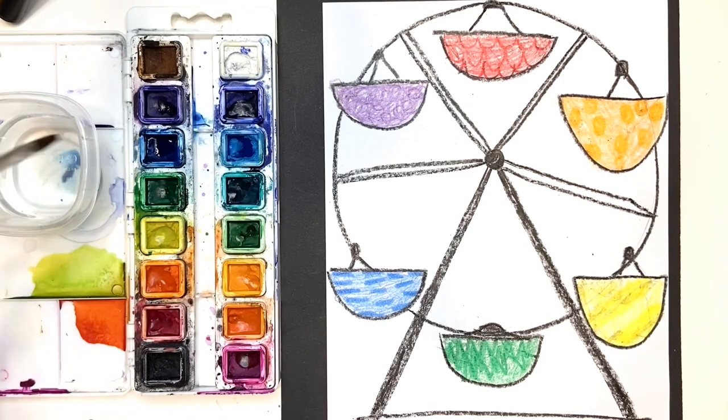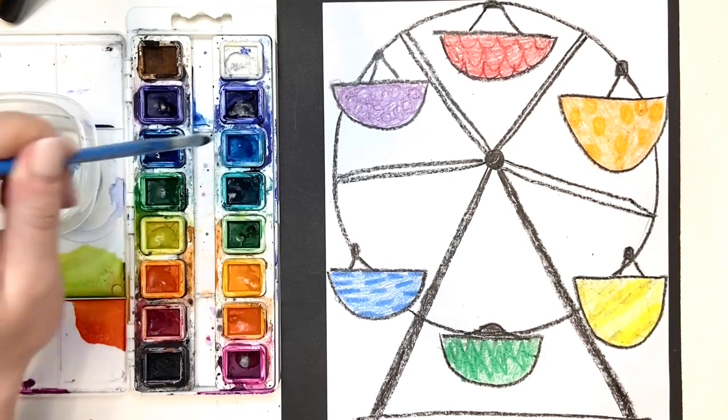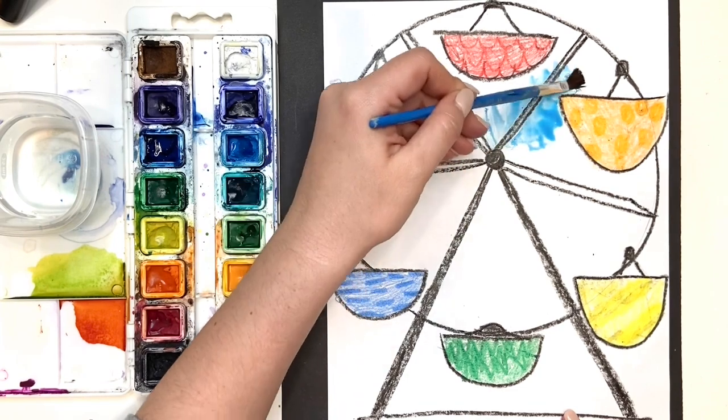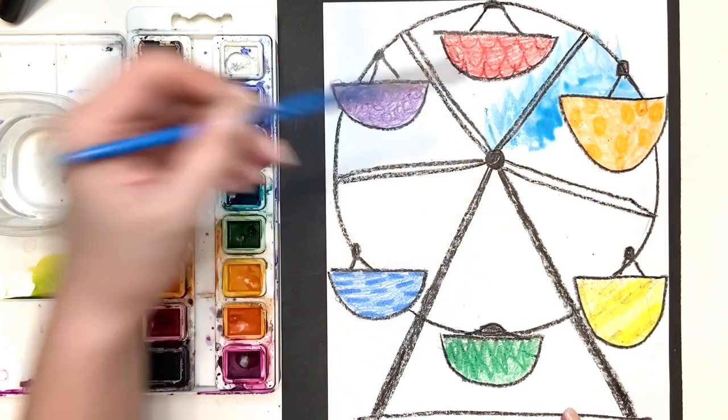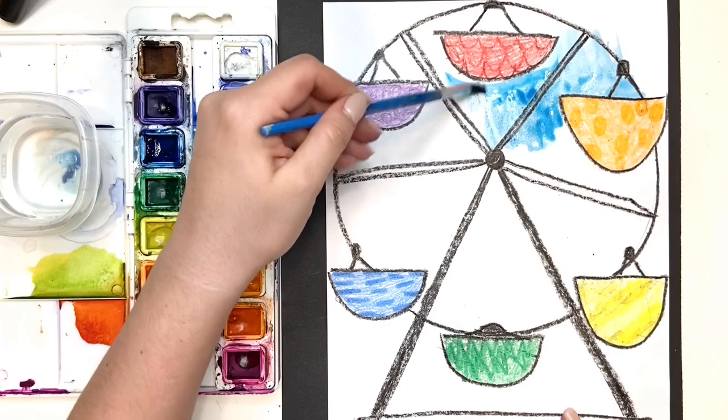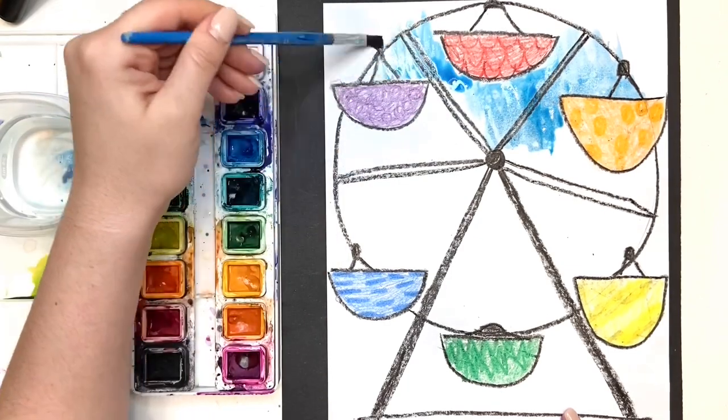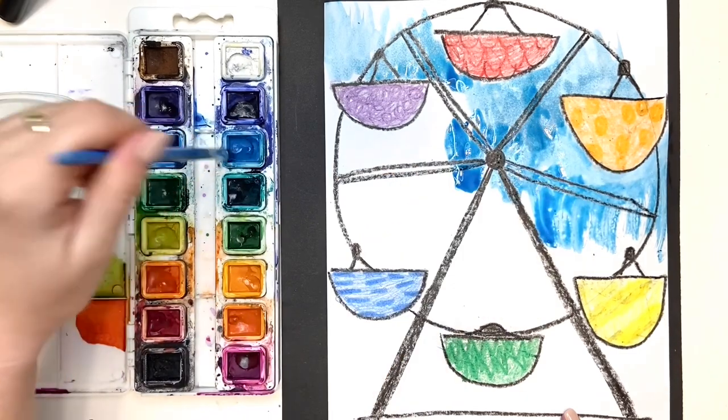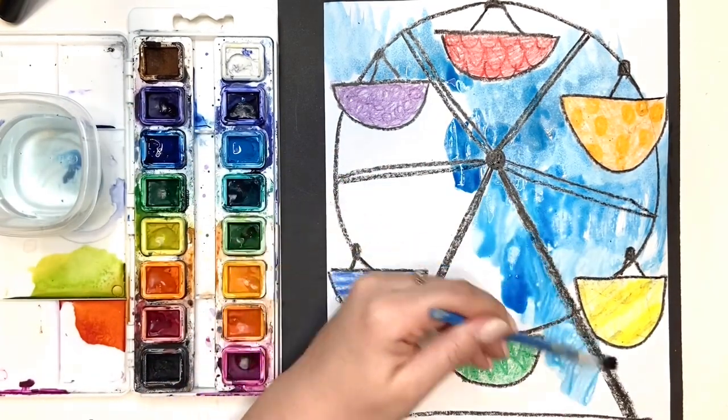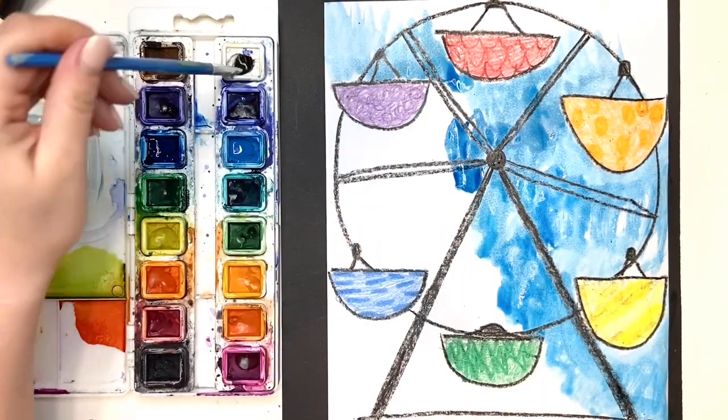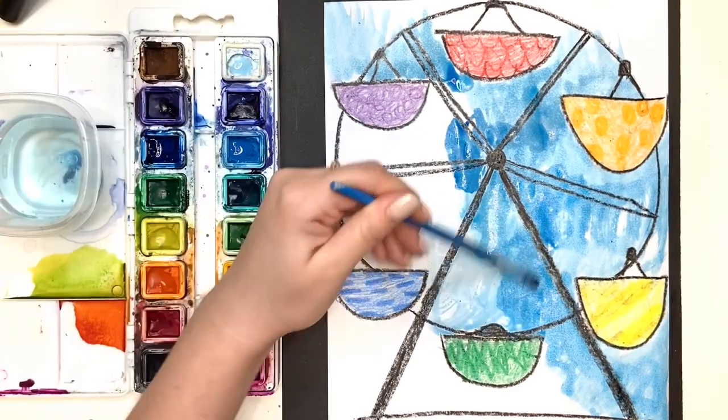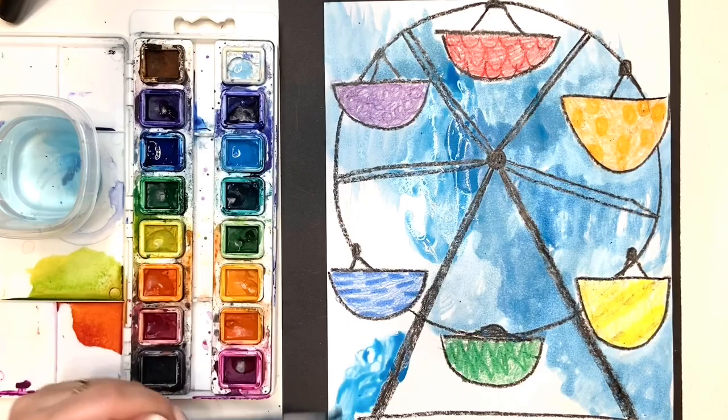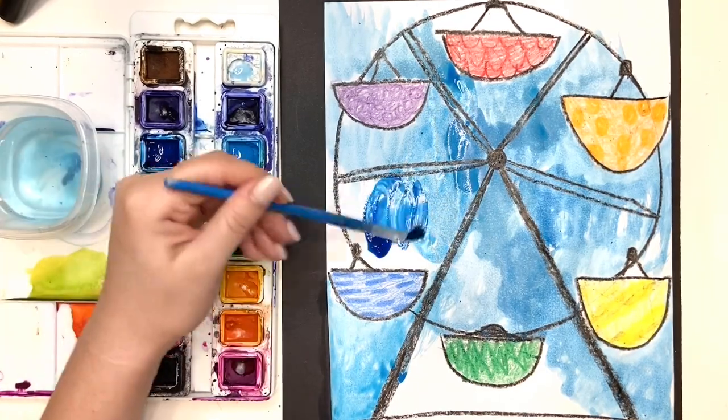I'm going to get my paintbrush and wake up my paint for the blues. And then I'm going to go over my entire paper. However, if you don't have watercolor, you can use markers, you can use crayons. Maybe you even want to cut out your ferris wheel and use a blue piece of paper. It is up to you. But I would like to see a colored background. So not just a white piece of paper. However you want to do it, that's just fine with me.